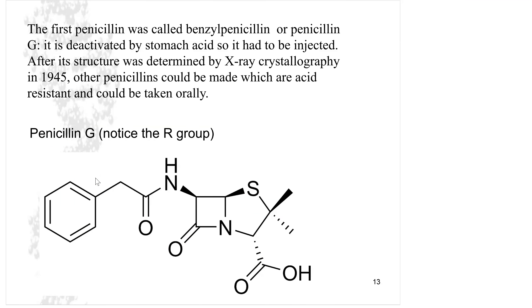The first penicillin, benzyl penicillin or Penicillin G, was deactivated by stomach acid, so it actually had to be injected in order to be effective. After the structure was determined, they were able to make some modifications so that the penicillin was acid resistant, and then it could be taken orally.